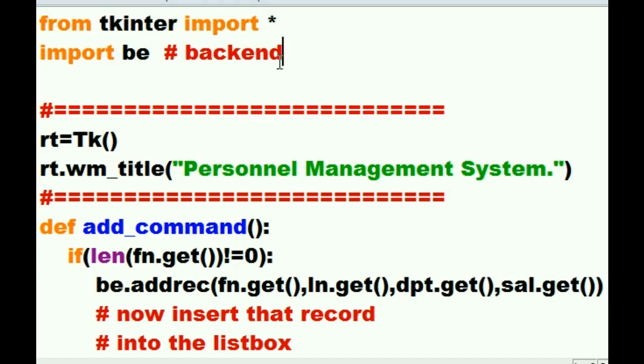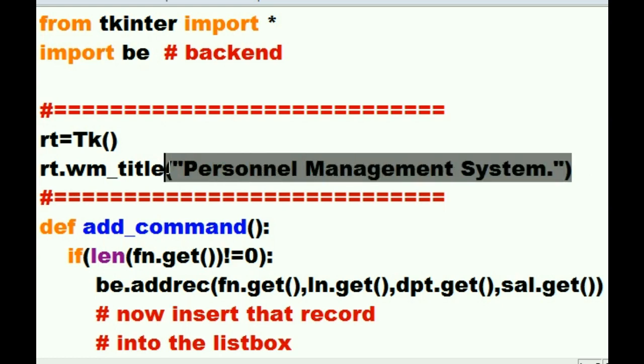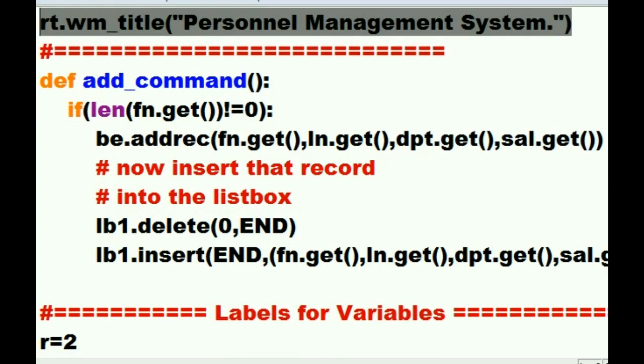In this third version of the program, we import tkinter and the BE backend file. We create the root window. We tell the system to put this into the title bar, and then we come to the add command function.